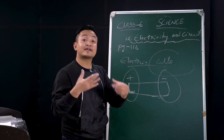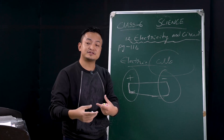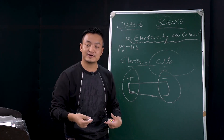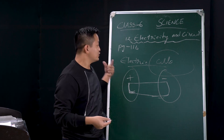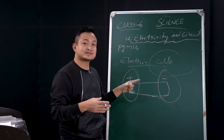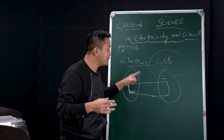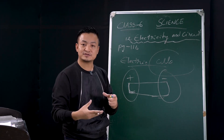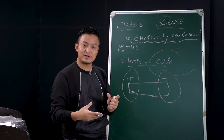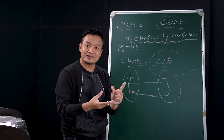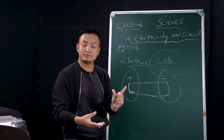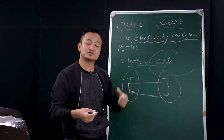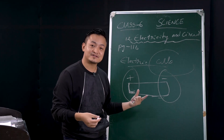A battery is also an example of chemical energy converting into electrical energy. We'll see how this battery works, and I'll give you an example of how a torchlight works — how there is a glow in a torchlight bulb.